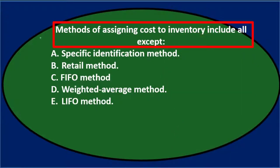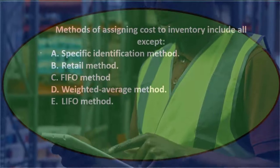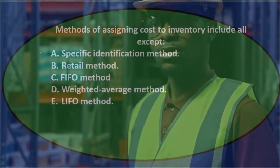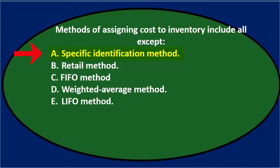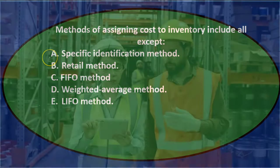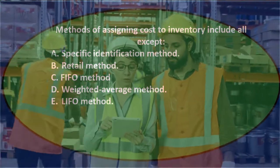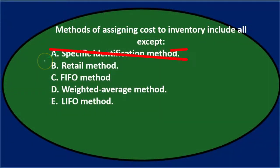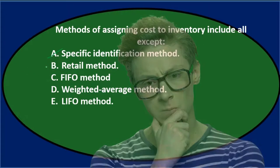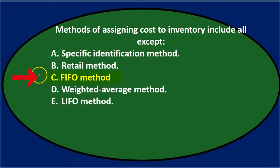Methods of assigning cost to inventory include all except: A. Specific identification — that is going to be an inventory method we typically use. It's not a flow method; it's when we specifically identify the inventory, typically used for large or non-homogeneous inventory items. B. Retail method — that doesn't really sound right. C. First in, first out method — we know that's clearly a method we would use, so that won't be it.